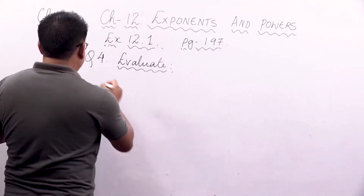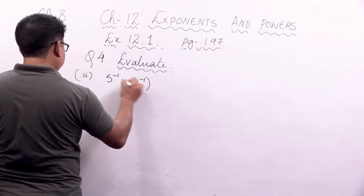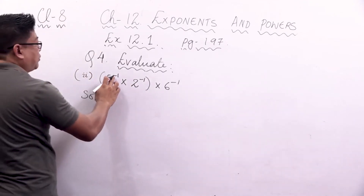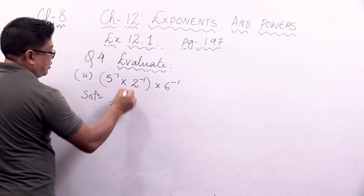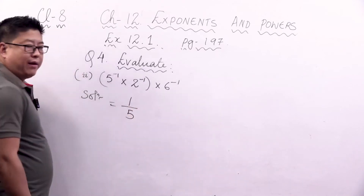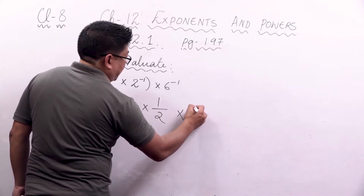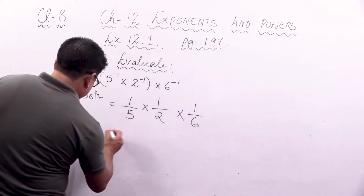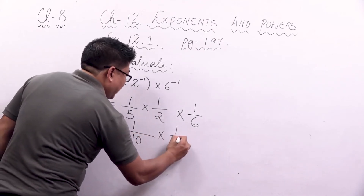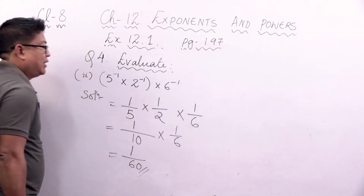Let's look at question number 2. The question is: 5 to the power minus 1 into 2 to the power minus 1 into 6 to the power minus 1. All the exponents are minus, so we remove the minus signs. 5 to the power minus 1 becomes 1 by 5, 2 to the power minus 1 becomes 1 by 2, and 6 to the power minus 1 becomes 1 by 6. Multiplying: 1 into 1 is 1, 5 into 2 is 10, then 1 into 1 is 1, and 10 into 6 is 60. So the final answer is 1 by 60.